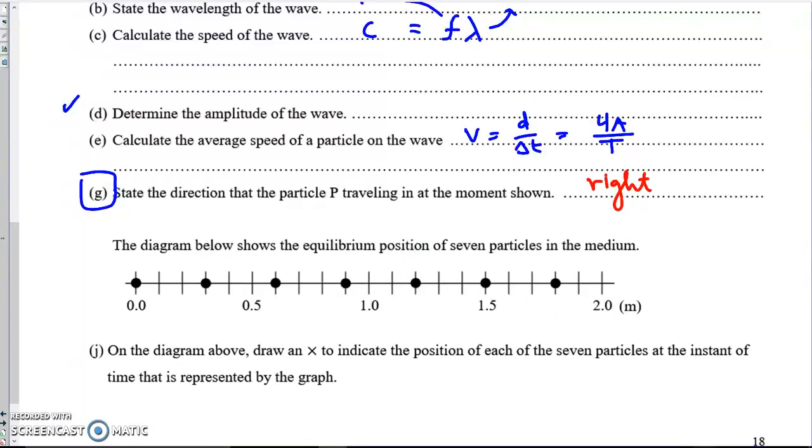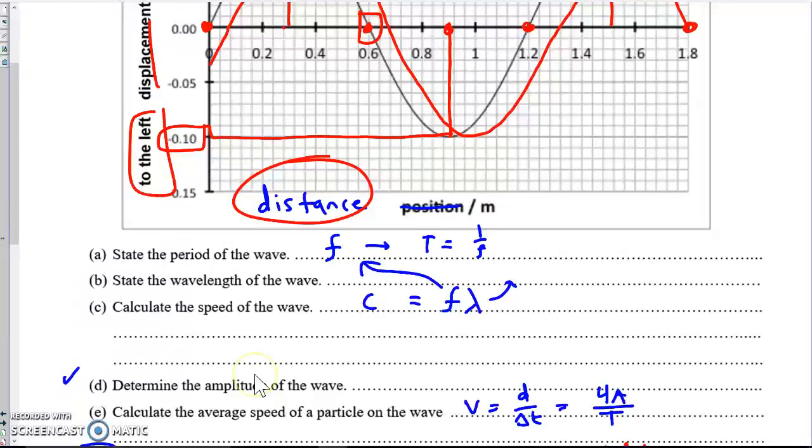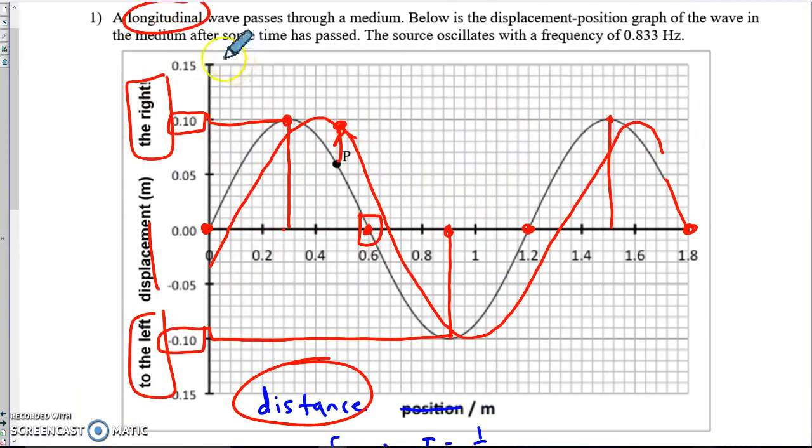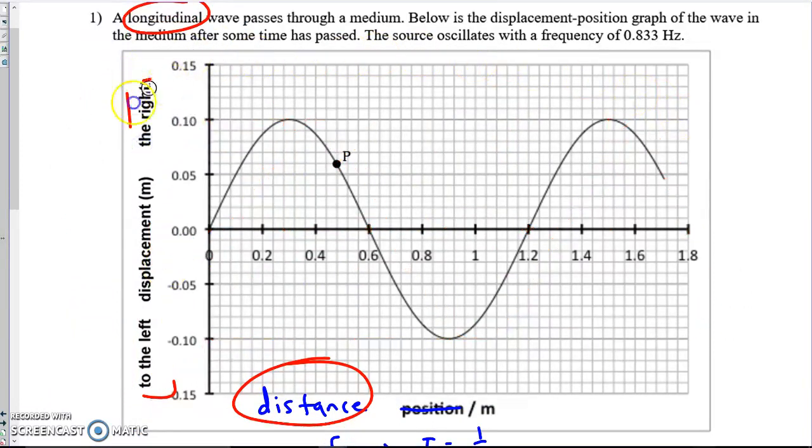As the final thing, we have to answer question, let's see, do part J here. It says, on the diagram, draw an X to indicate the position of each particle at the instant represented by the graph. So let's go back to the graph. If we look back, you'll see I've highlighted a crucial word. This wave is a longitudinal wave. It's not a transverse wave like this. The particles are oscillating left and right, so it looks something like, maybe like this. There's a compression, and then a rarefaction, and then a compression, and then a rarefaction. And so we don't know yet where those particles are located, but we're going to draw it in our final part J.